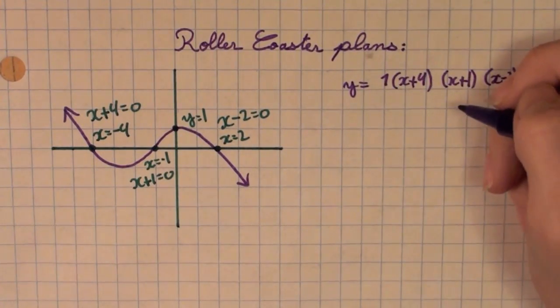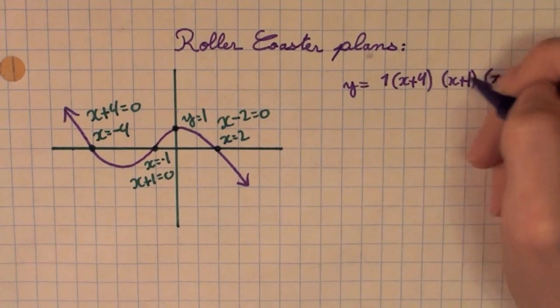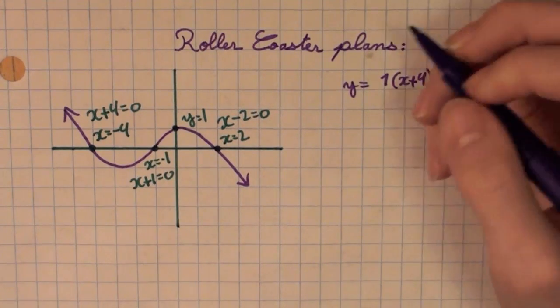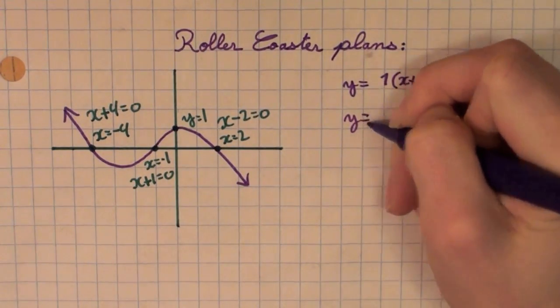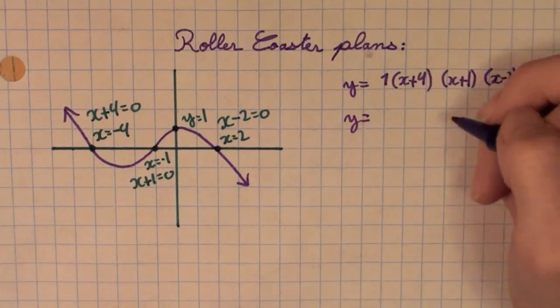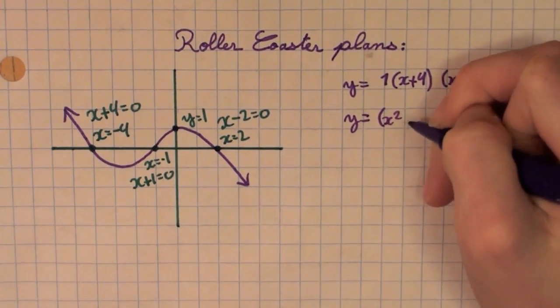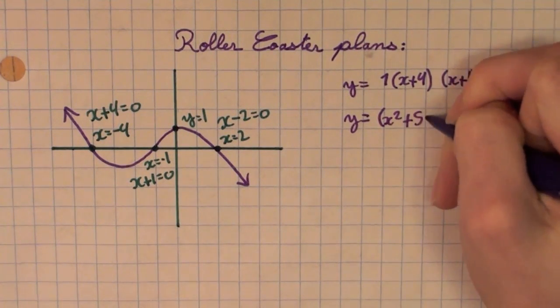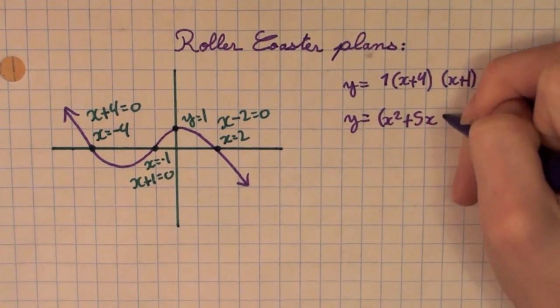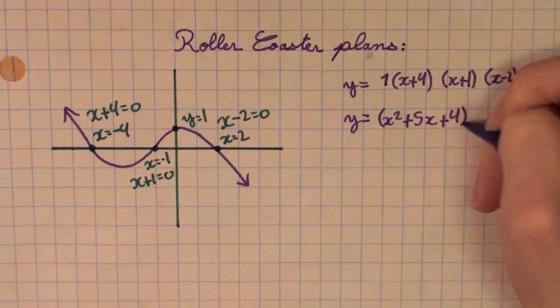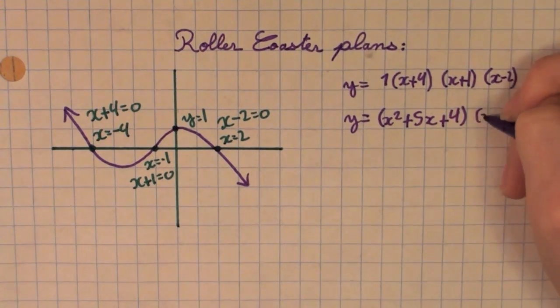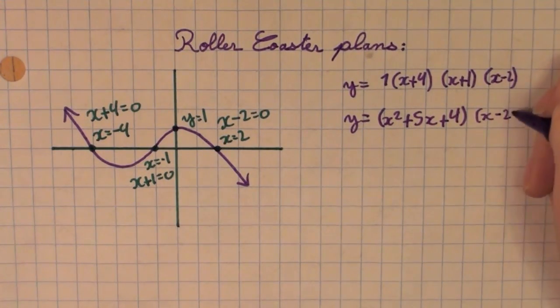Then, we want to distribute the factors. So, the first two, X squared plus 5X plus 4, and we still have the last one, X minus 2.